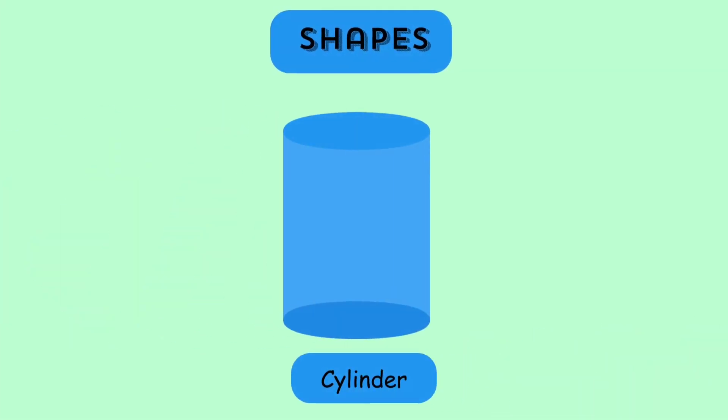Can you tell me what shape is this? A cylinder. Cylindrical shapes can be seen everywhere around us.